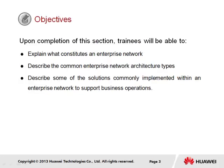Upon completion of this section, it is expected that trainees will be able to explain what constitutes an enterprise network, describe the common enterprise network architecture types, as well as describe some of the solutions commonly implemented within an enterprise network to support business operations.